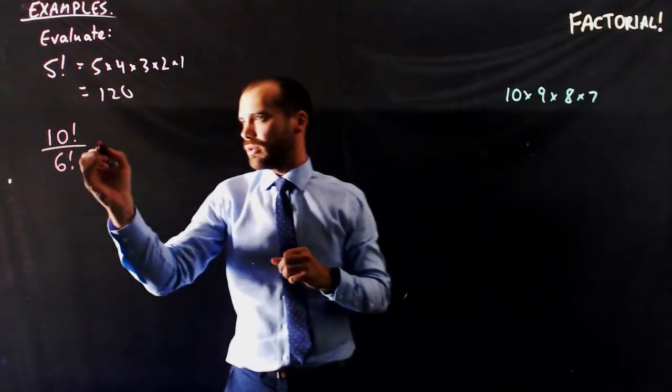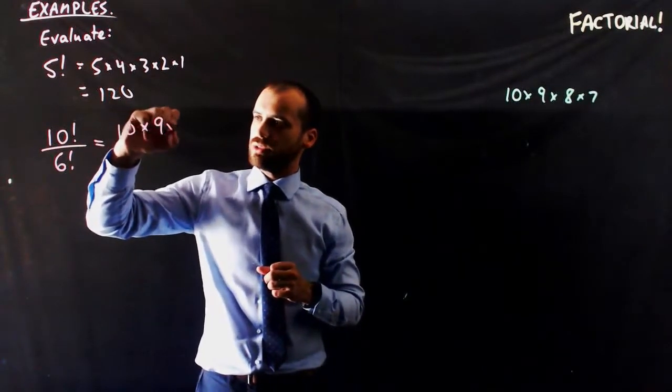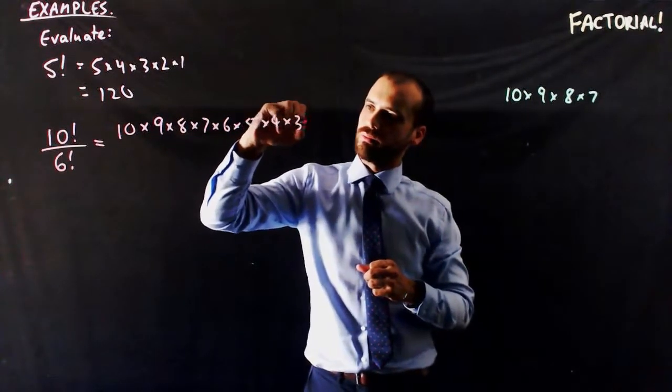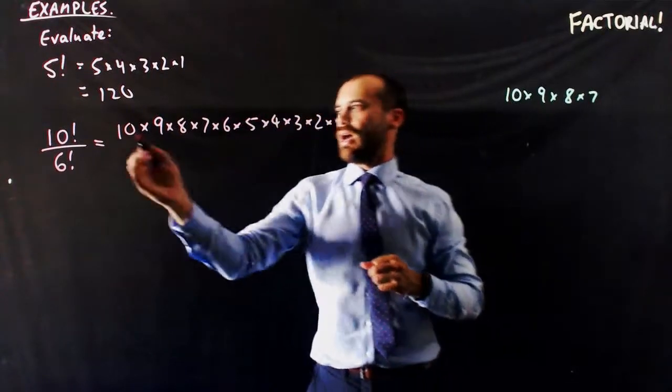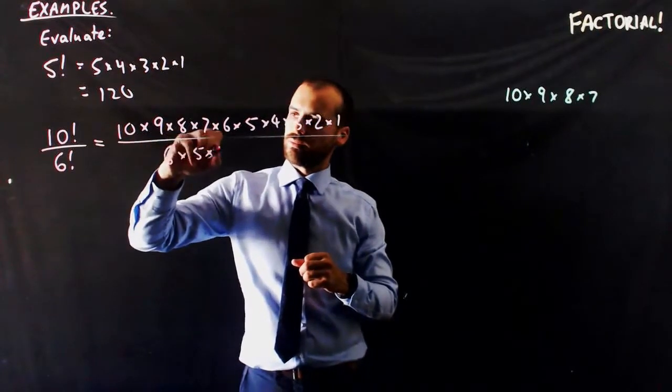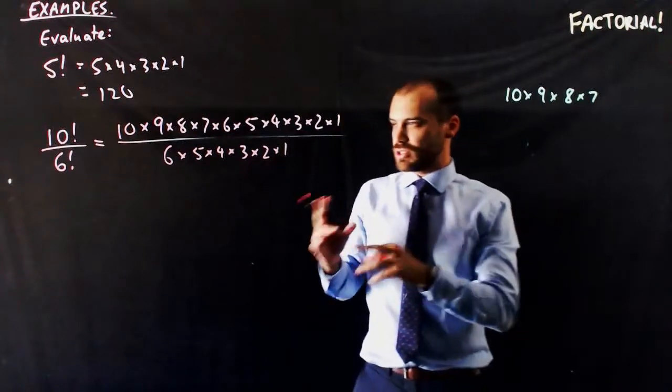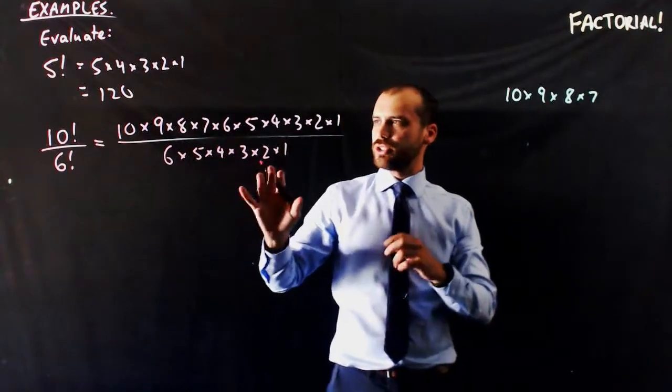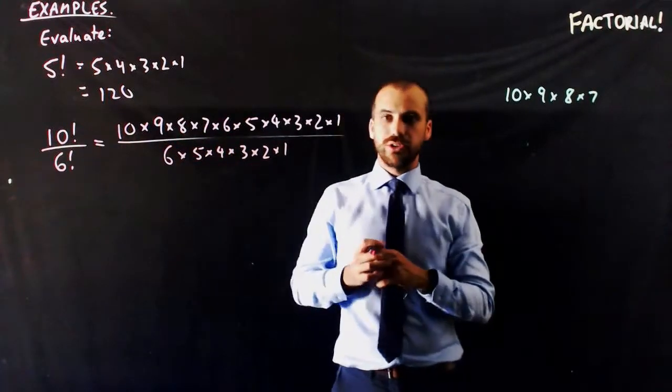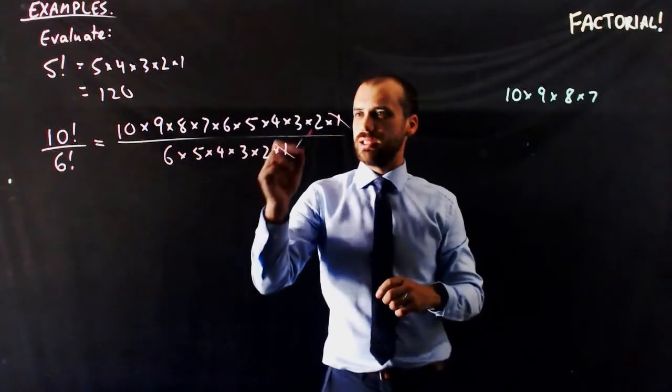Now, I'm going to show you why that works. You know what 10 factorial is. It's 10 times 9 times 8 times 7 times 6 times 5 times 4 times 3 times 2 times 1. And you also know what 6 factorial is. It's 6 times 5 times 4 times 3 times 2 times 1. So, if I want to just do 10 times 9 times 8 times 7, I need to do 10 factorial over 6 factorial because then all of that's multiplied, divided by all of that's multiplied, I can do some cancelling.